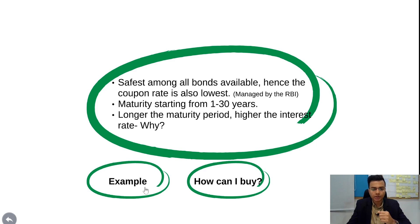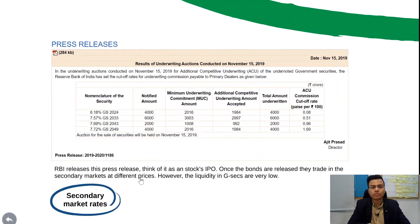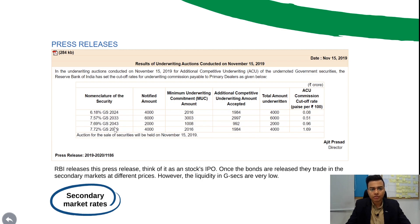Let me show you an example. I took this screenshot from the RBI website — this is how the RBI announces the issue of government securities. You can see a bond with a 6.8% coupon rate maturing in 2024. And if you look at a bond maturing in 2049, the coupon rate is higher at 7.72%, confirming that higher maturity means a higher coupon rate.